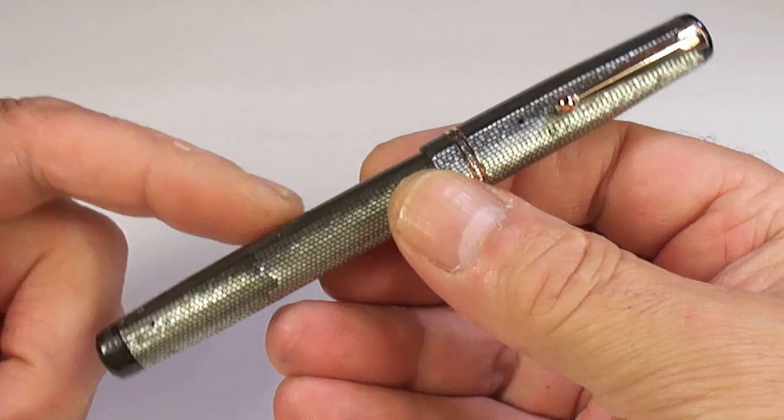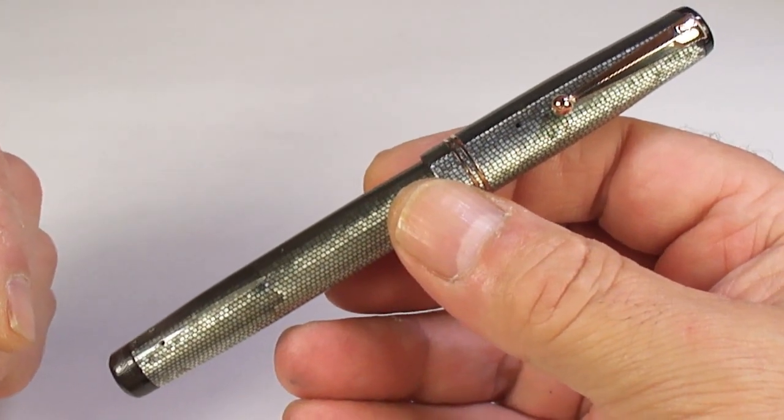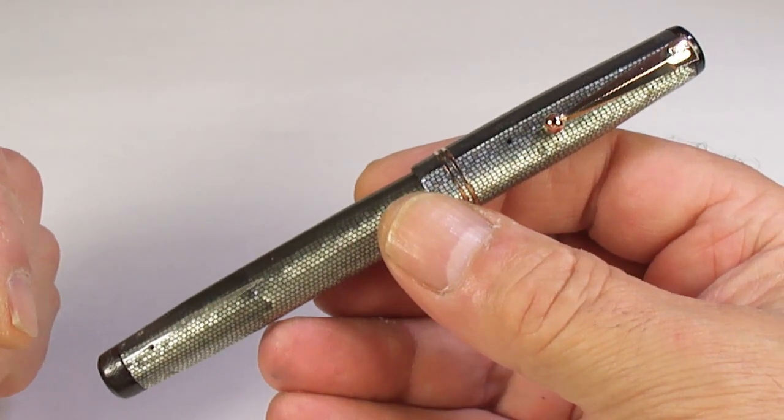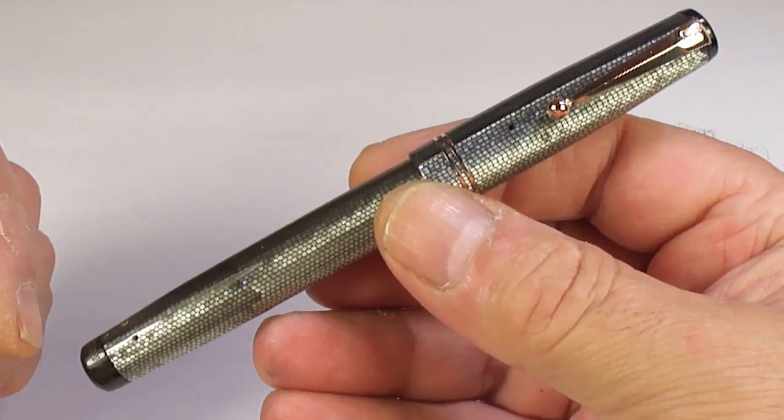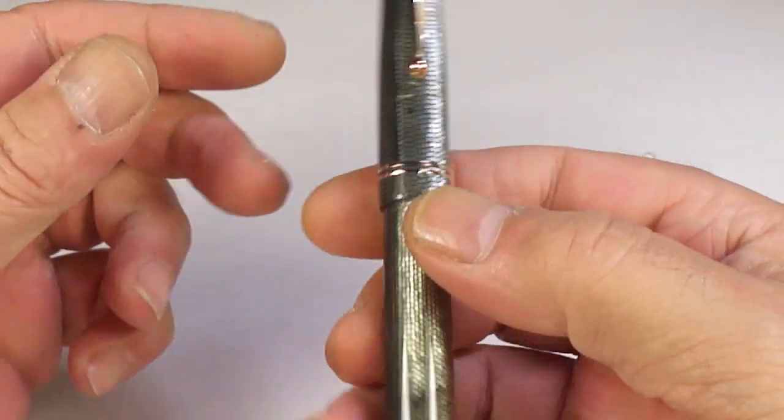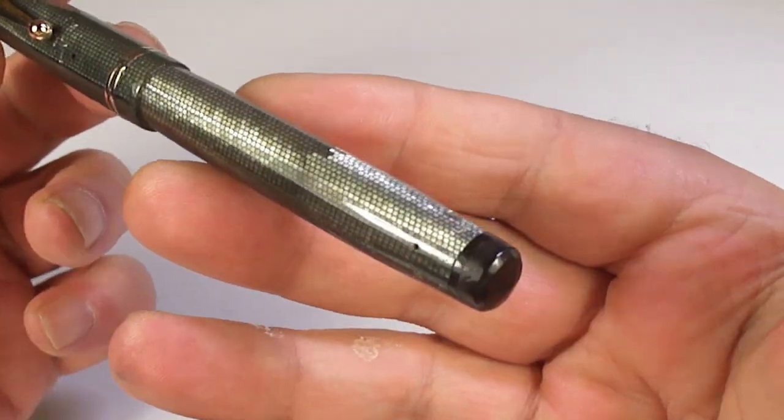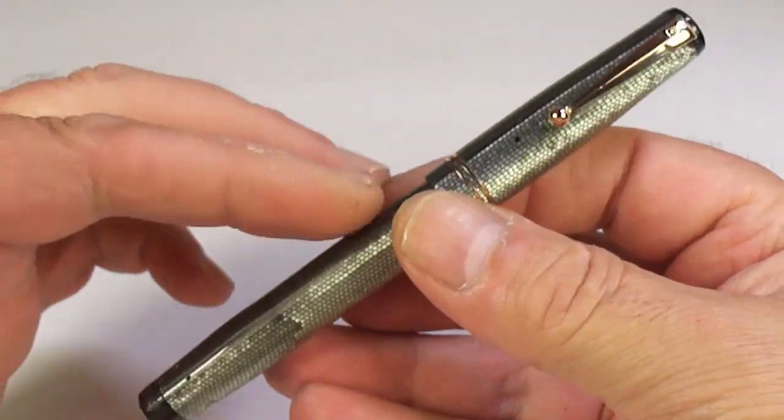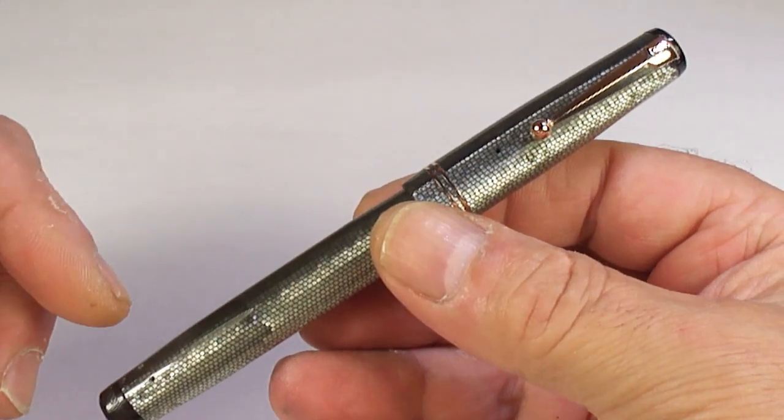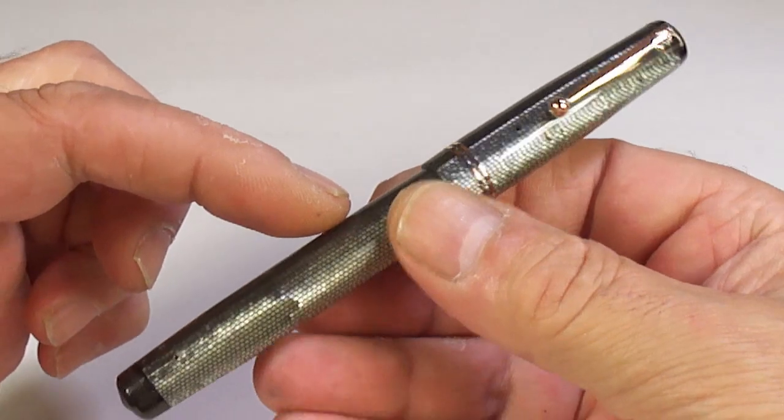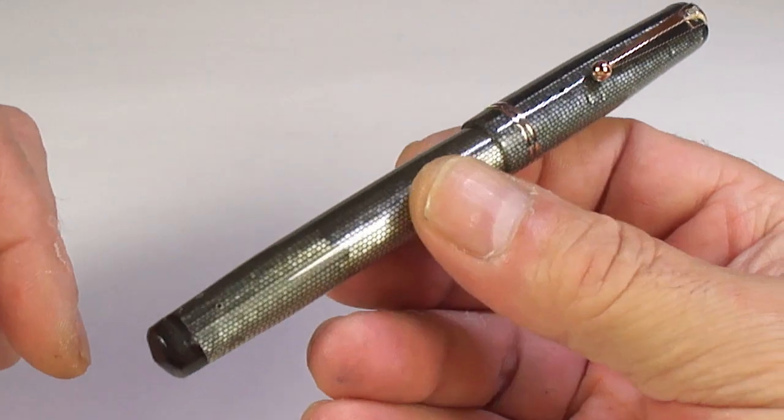What we've got for you here is a gorgeous, handsome Swan leverless pen L312-90. The L312 is the model. The 90 indicates that this one is in this gorgeous silver lizard skin pattern. These particular pens from circa early 1930s came in numerous different colours, not only different colours but different trim.